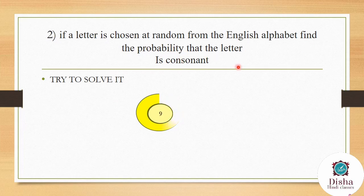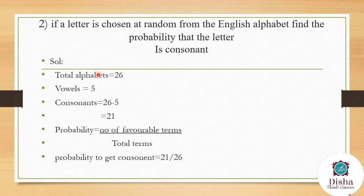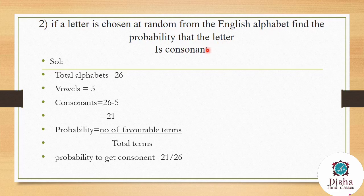Next question: if a letter is chosen at random from the English alphabet, find the probability that the letter is a consonant. There are 26 total alphabets, 5 are vowels, and 21 are consonants. Probability = number of favorable terms / total terms = 21/26.